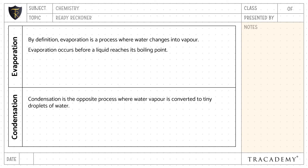Evaporation occurs before a liquid reaches its boiling point, whereas condensation is a phase change regardless of the temperature.